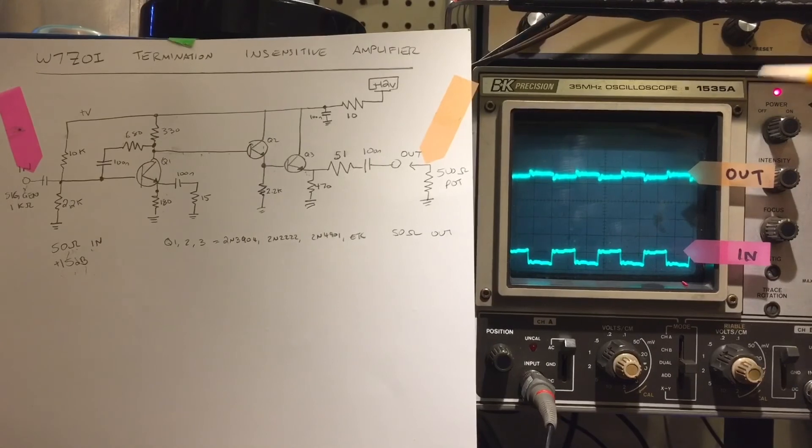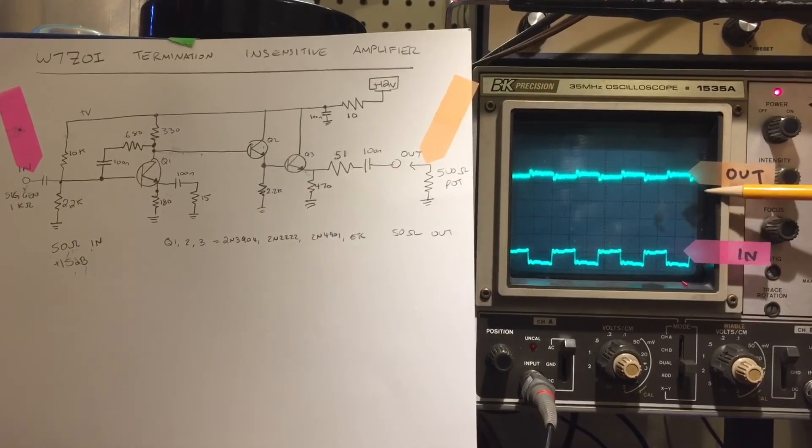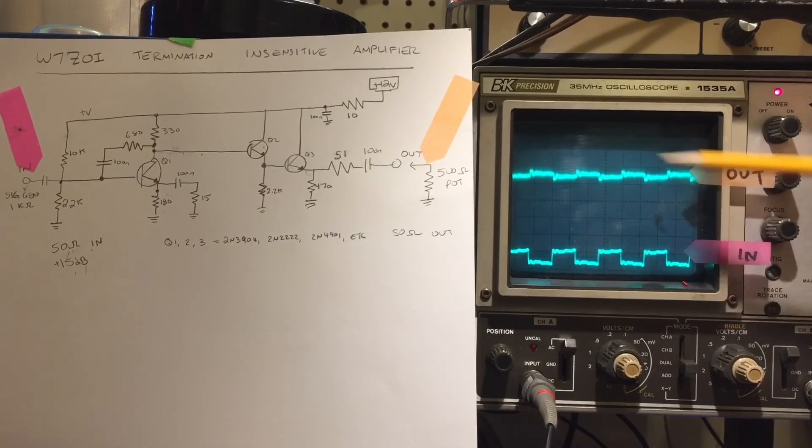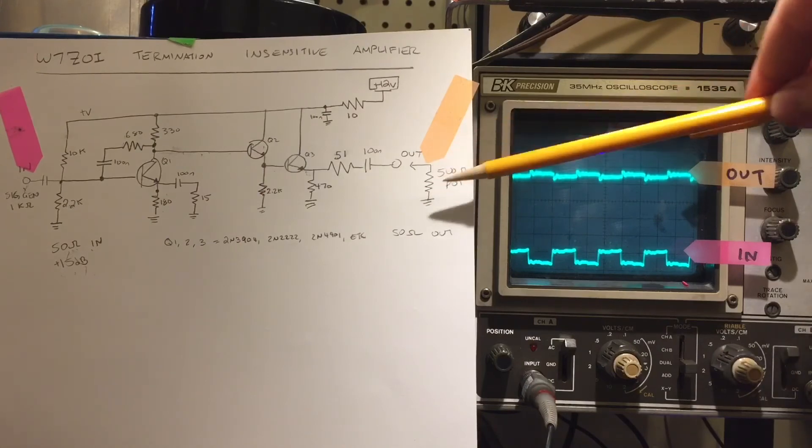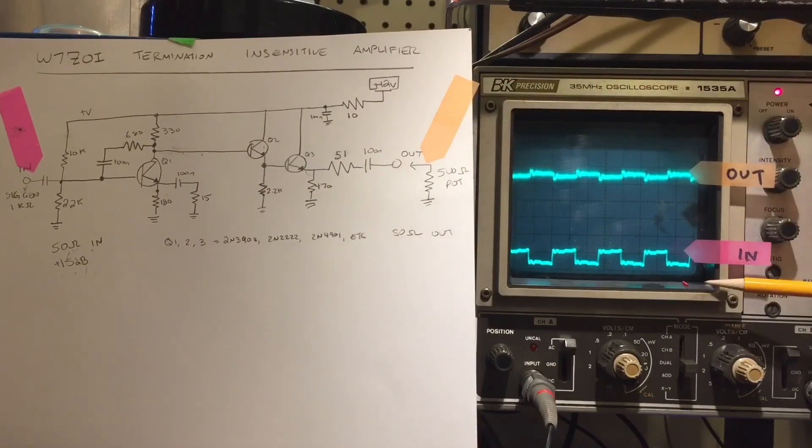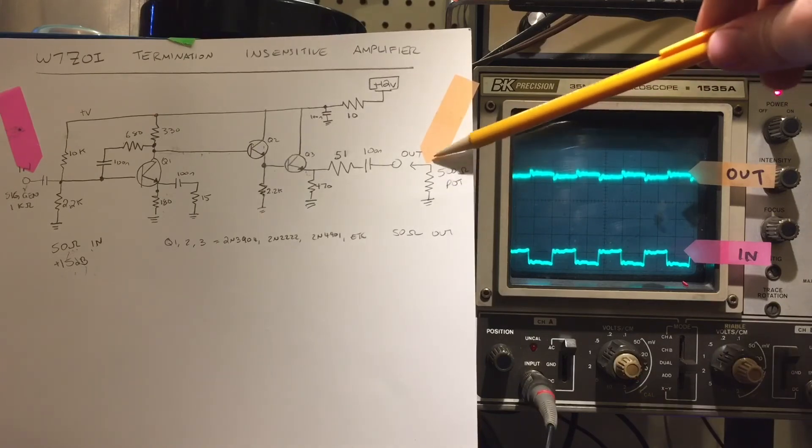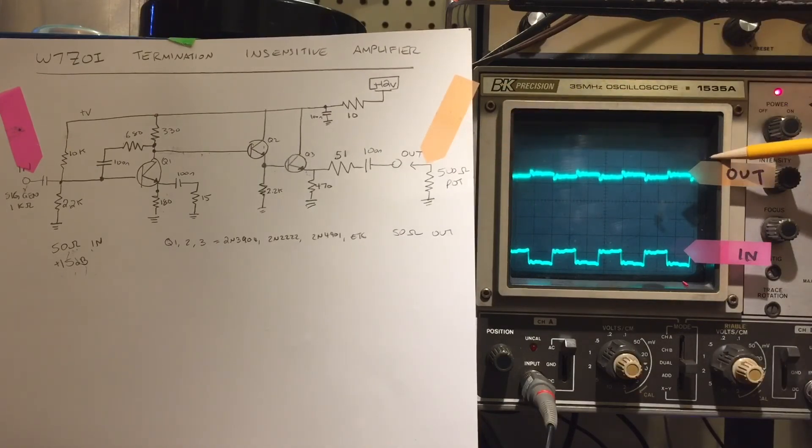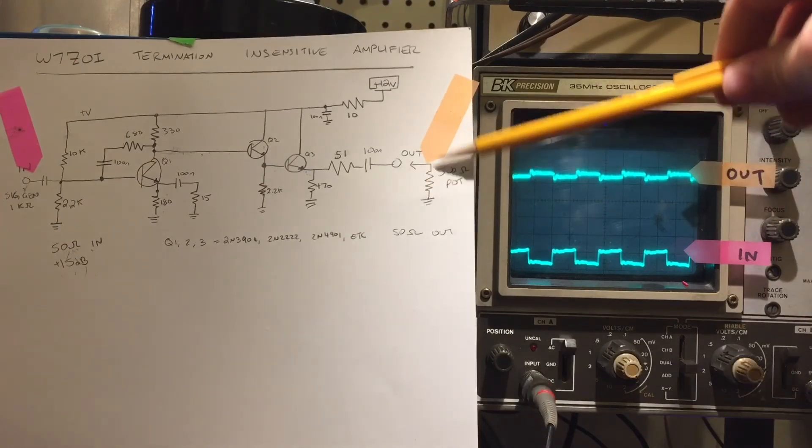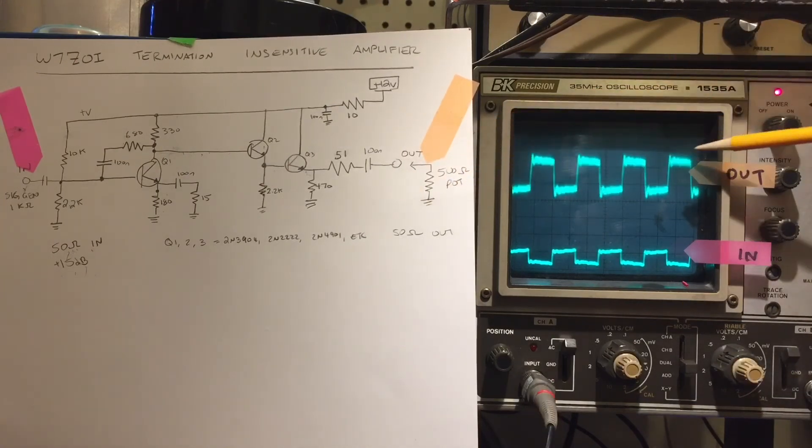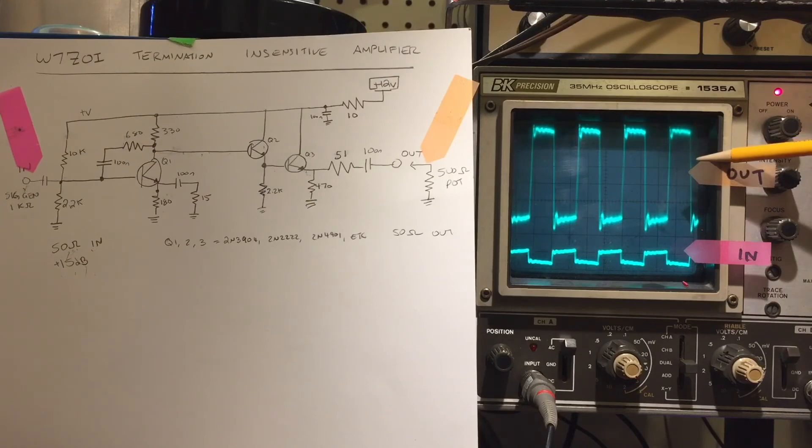As before, we've got two probes on this amplifier. The top trace here is our output, just across that 500 ohm pot we're going to use as an adjustable load. And the bottom trace here being at the input, just after our signal generator. And like before, this pot is turned all the way down as close to zero ohms as it'll go, so shorting that point to ground, not developing much voltage here. And just as before, as I turn up the impedance of our load here, you can see our output voltage starting to rise at that point. So that's about 500 ohms, and look at all that useful gain we've got. You know, about 15 dB of gain between those two traces, which is great.